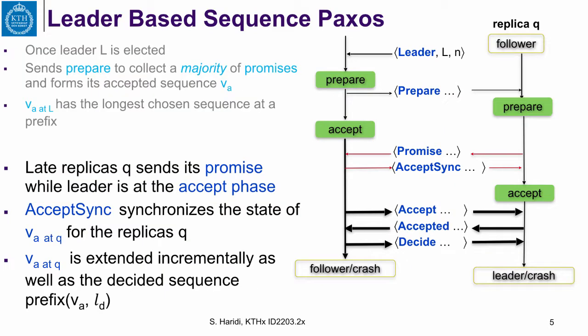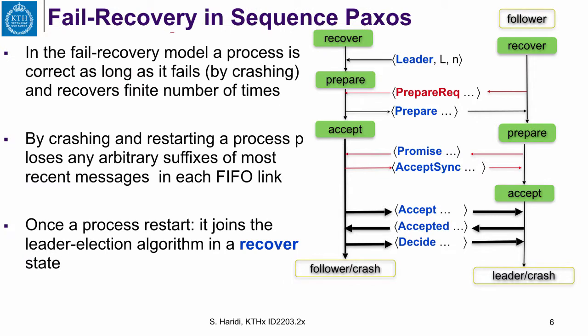The reason it waits for a majority of followers is because it only waits for promises from a majority of followers. So the leader and those followers move to the accept phase. The accepted sequence is extended incrementally, as well as the decided sequence, which is a prefix of the accepted sequence. One more thing to address is when a follower comes late after the leader has moved to the accept phase. A late replica sends a promise while the leader is in the accept phase, and the accept synchronizes the state of that replica with that of the leader.